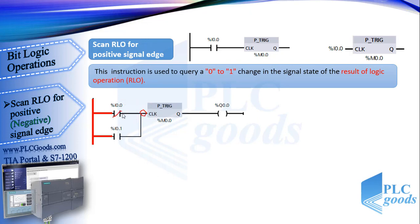When either I 0.0 or I 0.1 is activated, the virtual power — in other words, the result of logic operation RLO — changes from 0 to 1. This instruction detects this change at its input and generates a pulse which makes Q 0.0 turn on for only one program cycle, which is about 5 ms.